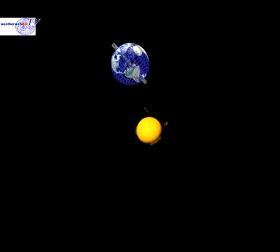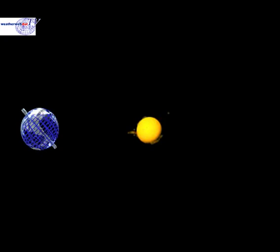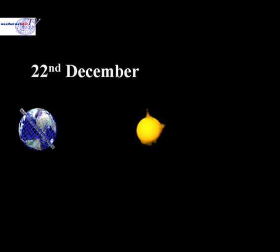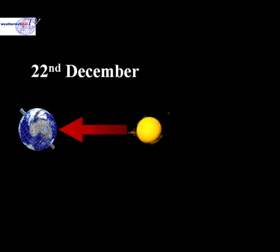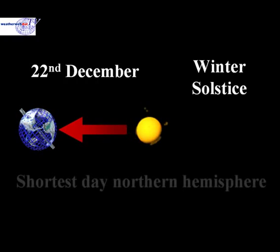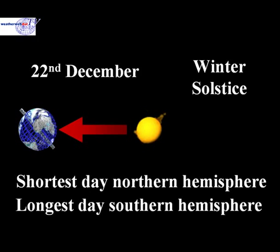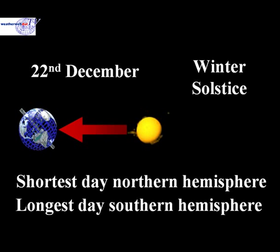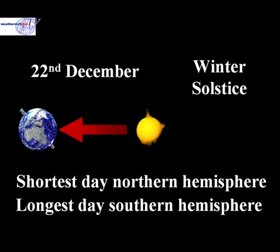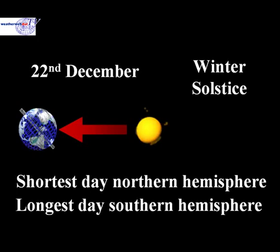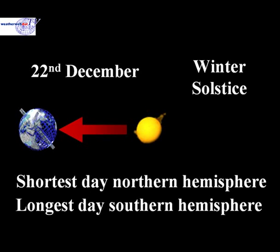Let's just move the Earth a quarter of an orbit around the Sun. Notice how the axis of the Earth is tilting the Northern Hemisphere away from the Sun, so the Sun is shining directly over the Southern Hemisphere — over the Tropic of Capricorn at 23.5 degrees south. This is the winter solstice in the Northern Hemisphere, which occurs around the 22nd of December each year. It's the shortest day of the year in the Northern Hemisphere, but the longest day of the year in the south. It's high summer in the Southern Hemisphere, but the depths of winter in the north.